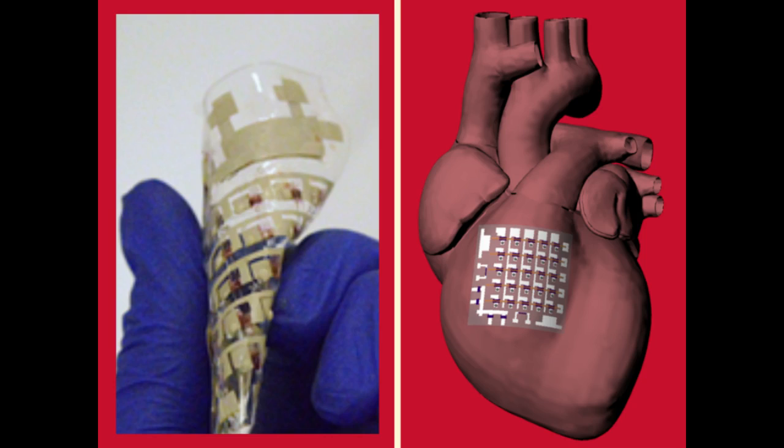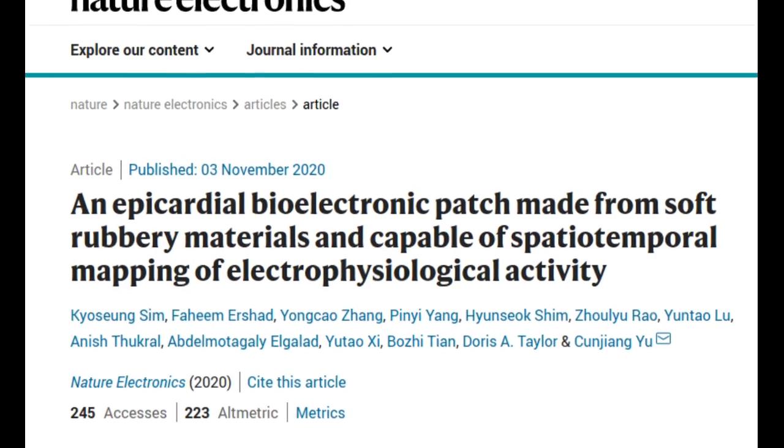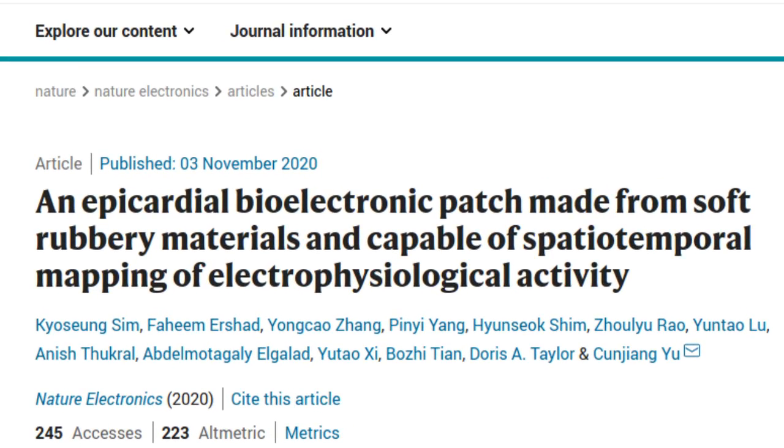Researchers from the University of Houston have reported in the journal Nature Electronics a patch made from fully rubbery electronics that can be placed directly on the heart to collect electrophysiological activity, temperature, heartbeat, and other indicators all at the same time.